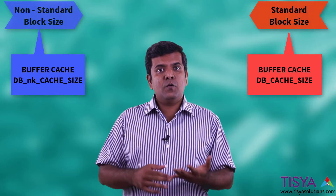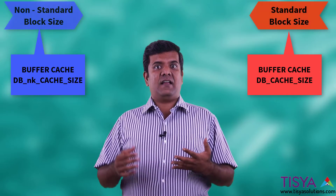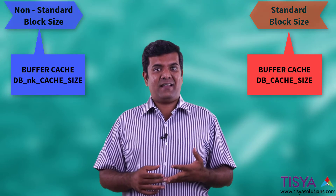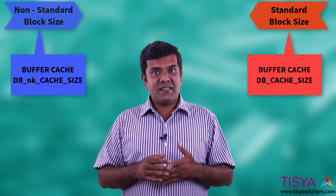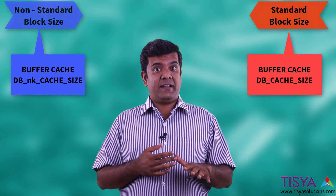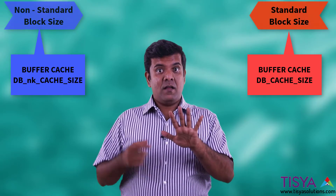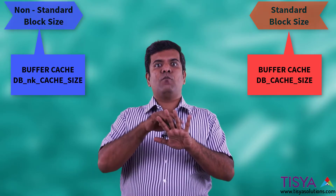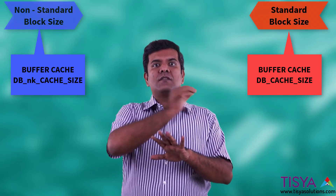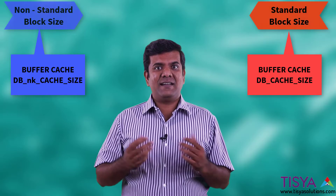The separate cache sizes available are db2k cache size, 4k cache size, 8k cache size, 16k cache size, and 32k cache size — five options in total, but one of them would anyway be used as the default block cache.